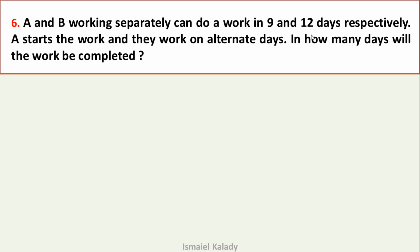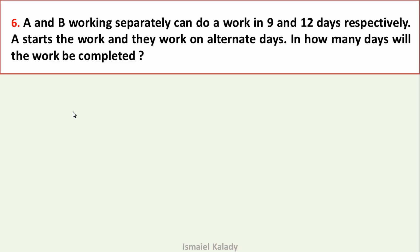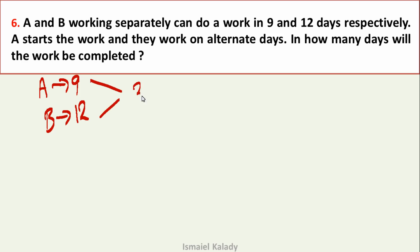Last question: A and B, working separately, can do a work in 9 and 12 days respectively. A starts the work and they work on alternate days. In how many days will the work be completed? LCM of 9 and 12 is 36. A's efficiency is 4 and B's efficiency is 3.